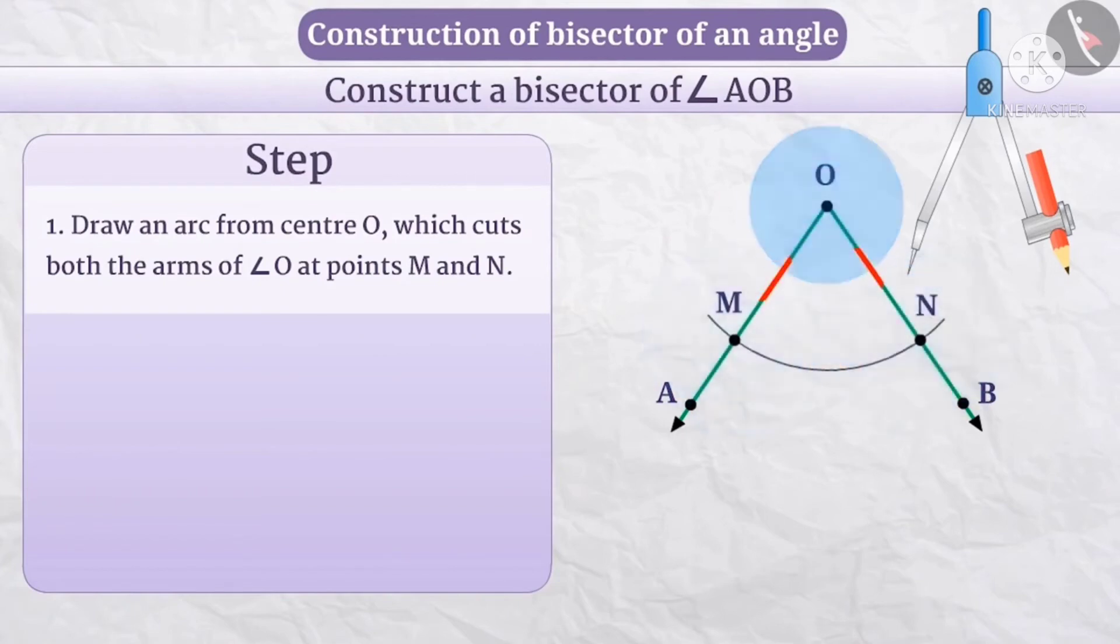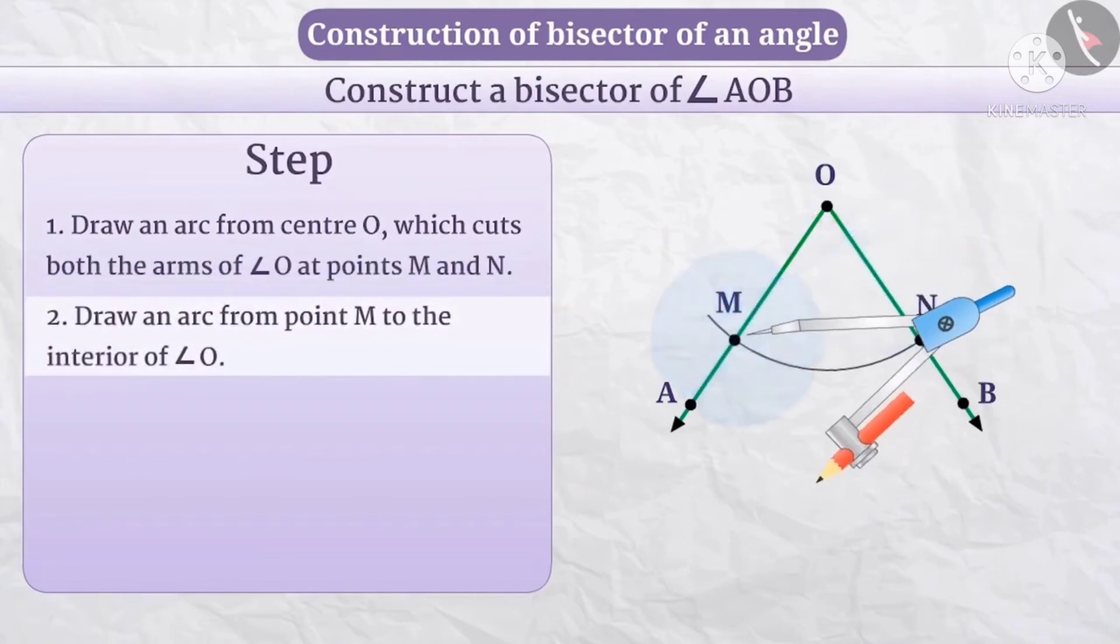We see the distance from O to M and distance from O to N are equal - the two lengths are equal. Then again we draw an arc with suitable distance from both M and N.